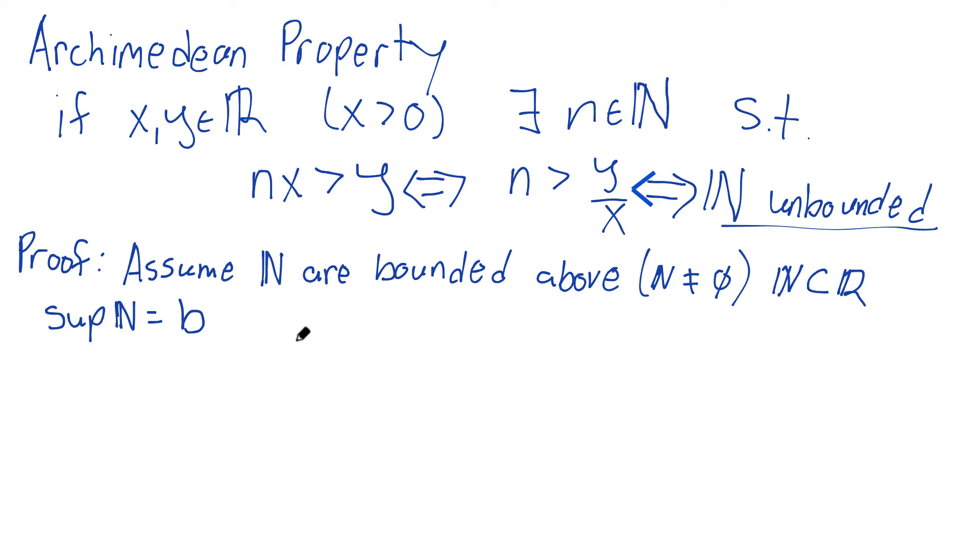So there's a supremum of N, and this exists. B is the least upper bound. It's an upper bound, and it's the smallest upper bound. Well this means that if I took away one,